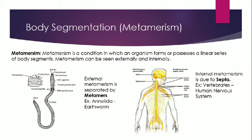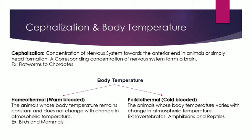The next parameter is cephalization — the concentration of the nervous system towards the anterior end in animals, or simply the process of head formation. Whenever the nervous system gets concentrated at the anterior end, it forms a brain. Animals from flatworms to chordates all have a well-developed brain.